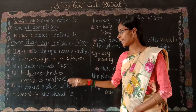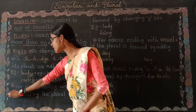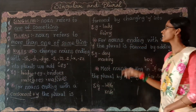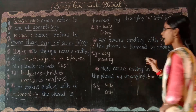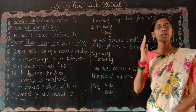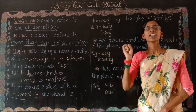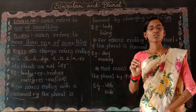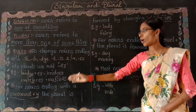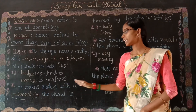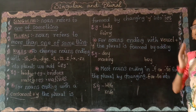Now the second rule: for nouns ending with a consonant plus Y, the plural is formed by changing Y into IES. First of all, you have to know what a consonant and a vowel are. There are five vowel letters in English: A, E, I, O, U. These letters are known as vowels. Apart from these letters, the remaining letters in the alphabet are known as consonants. So the second rule is: if a noun ends with a consonant plus Y, the plural is formed by changing Y into IES.